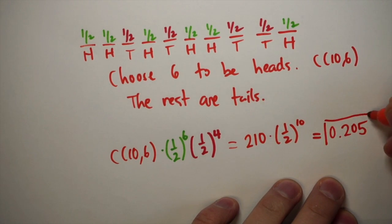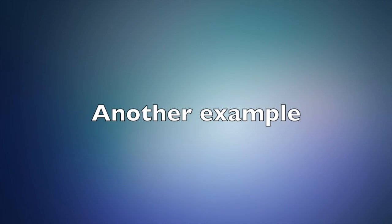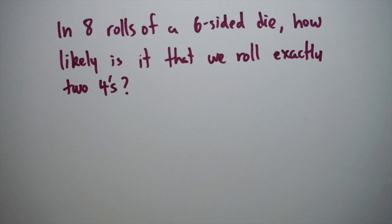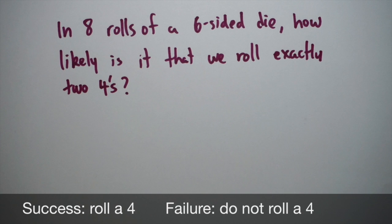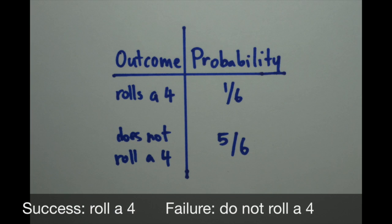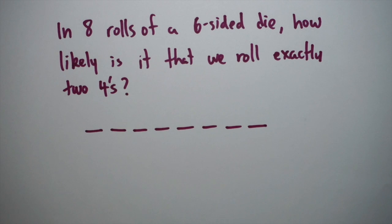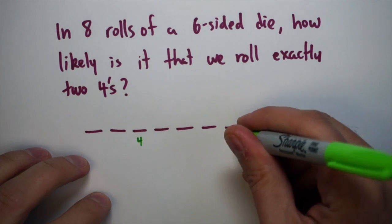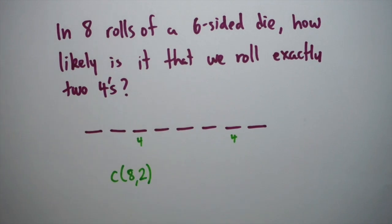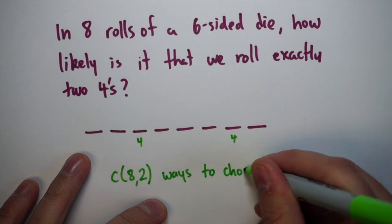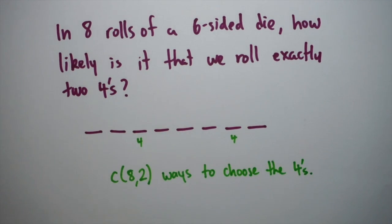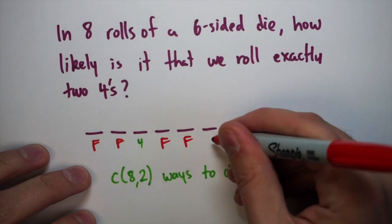If I want to roll a die eight times, how likely is it that you roll exactly two fours? We do this the same way. Success is rolling a four and failure is not rolling a four. We have a one-in-six chance of success and a five-in-six chance of failure. We have eight slots for our die rolls and want two of them to be fours, so there are C(8,2) ways of choosing which two are fours.